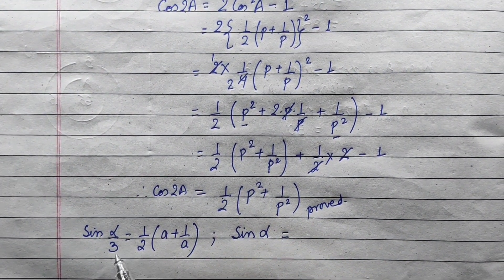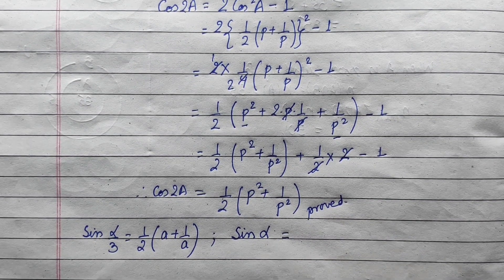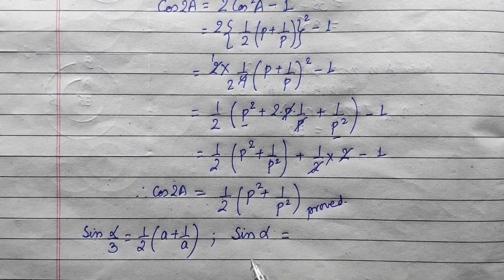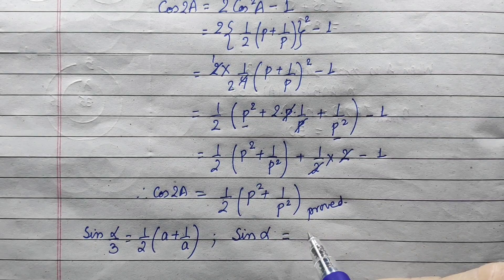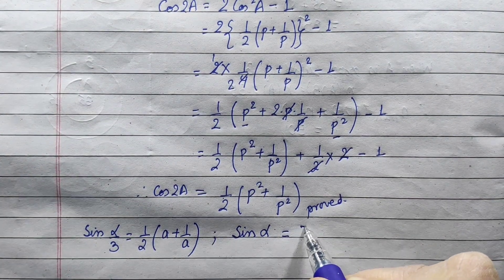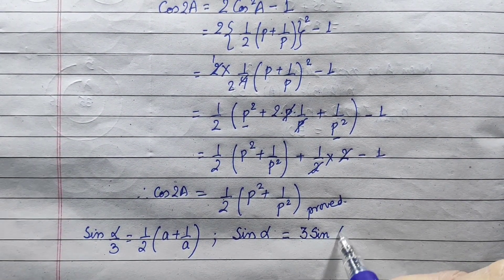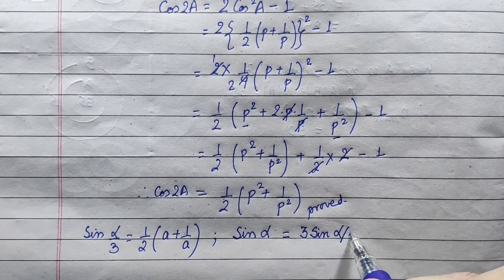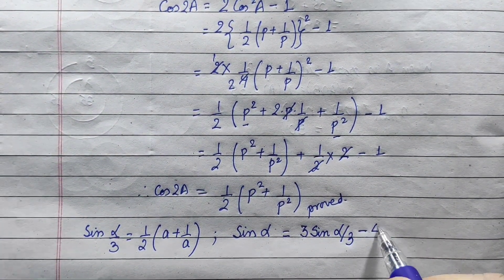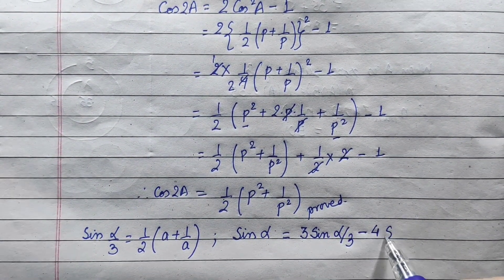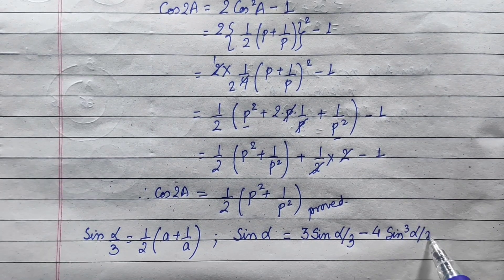Alpha by 3 is multiplied 3 times. Using the triple angle formula: sin(3θ) = 3 sin θ minus 4 sin³θ. So sin alpha equals 3 sin(α/3) minus 4 sin³(α/3).